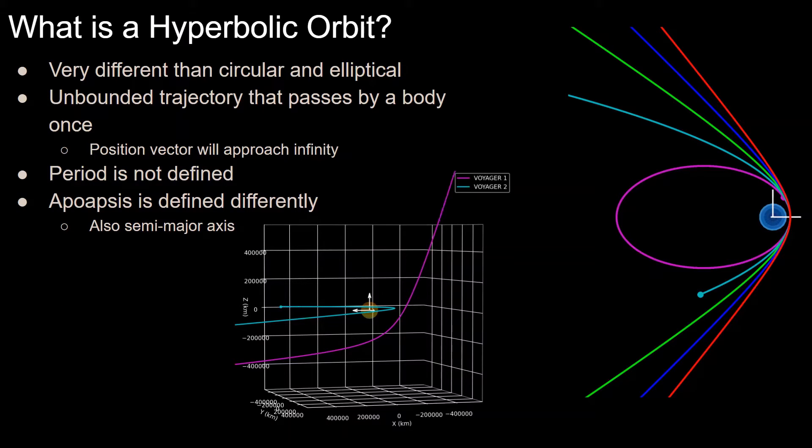So we'll start by defining what is a hyperbolic orbit. And hyperbolic orbits are very different than circular or elliptical orbits, so it's better to say trajectory than orbit, at least in my mind. So hyperbolic trajectories have enough energy that they are no longer bounded by the central body, thus will fly by it, only approaching it once.